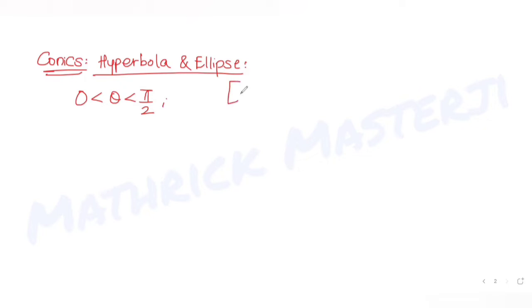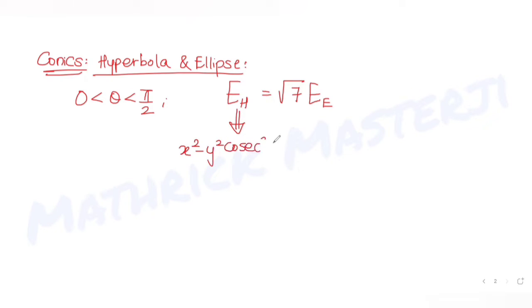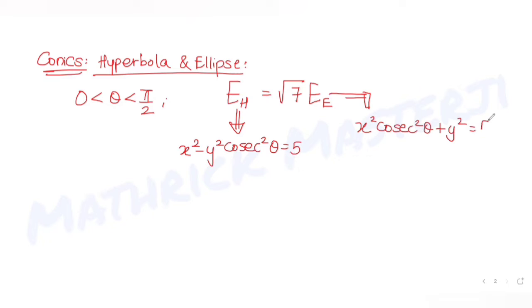the eccentricity of the hyperbola is √7 times the eccentricity of the ellipse, where the equation of the hyperbola is x² − y² cosec²θ = 5, and the equation of the ellipse is x² cosec²θ + y² = 5. We need to find the value of theta.